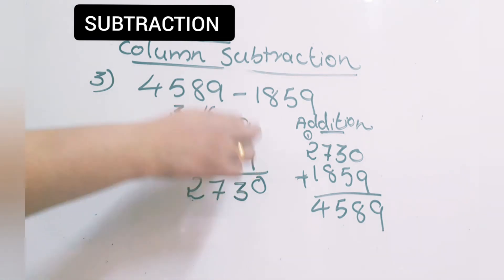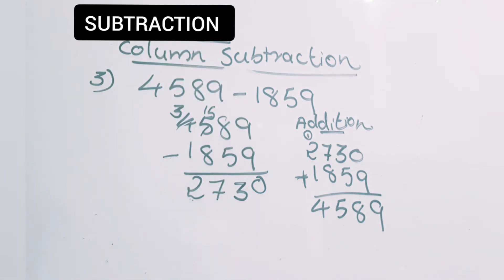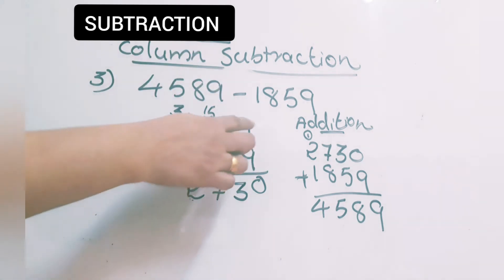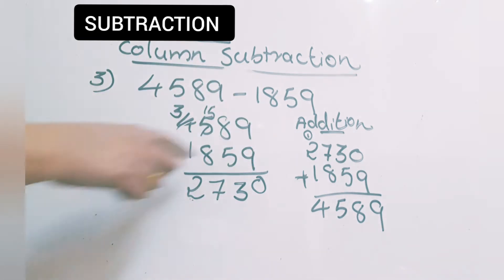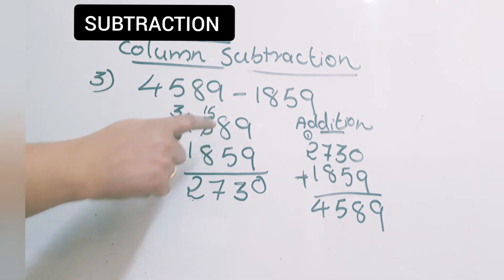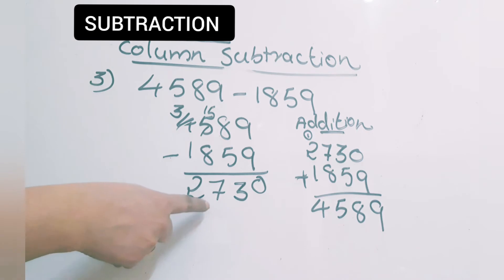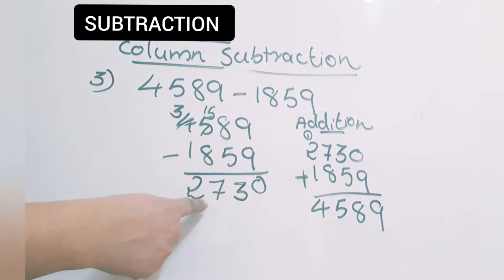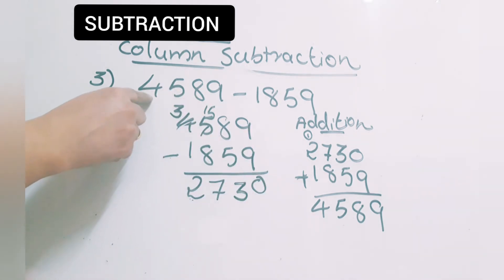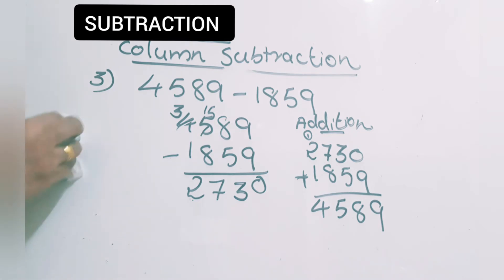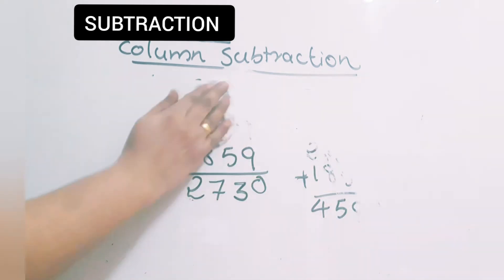First you have to check whether we need to regroup or not. If the upper number is smaller than the lower number, we have to borrow. In example 3, in only the hundreds place did we borrow. After getting the final answer, check by adding the difference and the subtrahend — the result should equal the original minuend. Then our subtraction is correct. Let's see one more example — example 4.